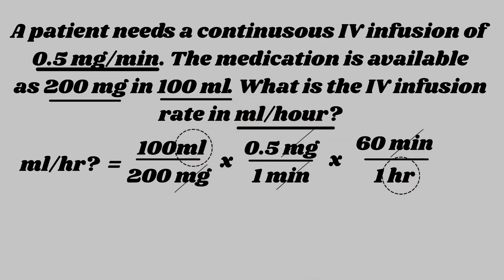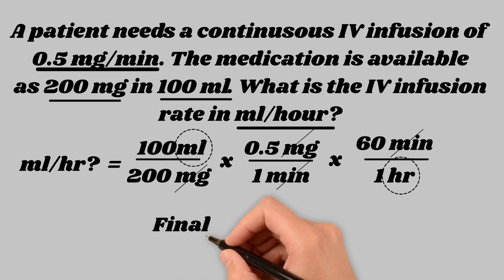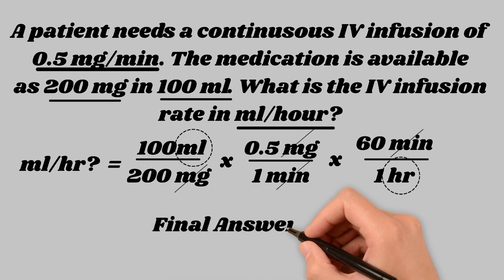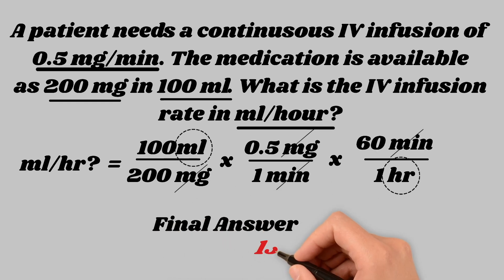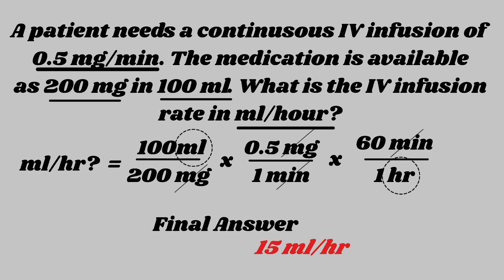If there's some confusion about how to calculate this out, there are two ways. You can calculate the top — 100 times 0.5 times 60 — and then calculate the bottom — 200 times 1 times 1 — and divide the numerator by the denominator to get your answer of 15 mLs per hour.